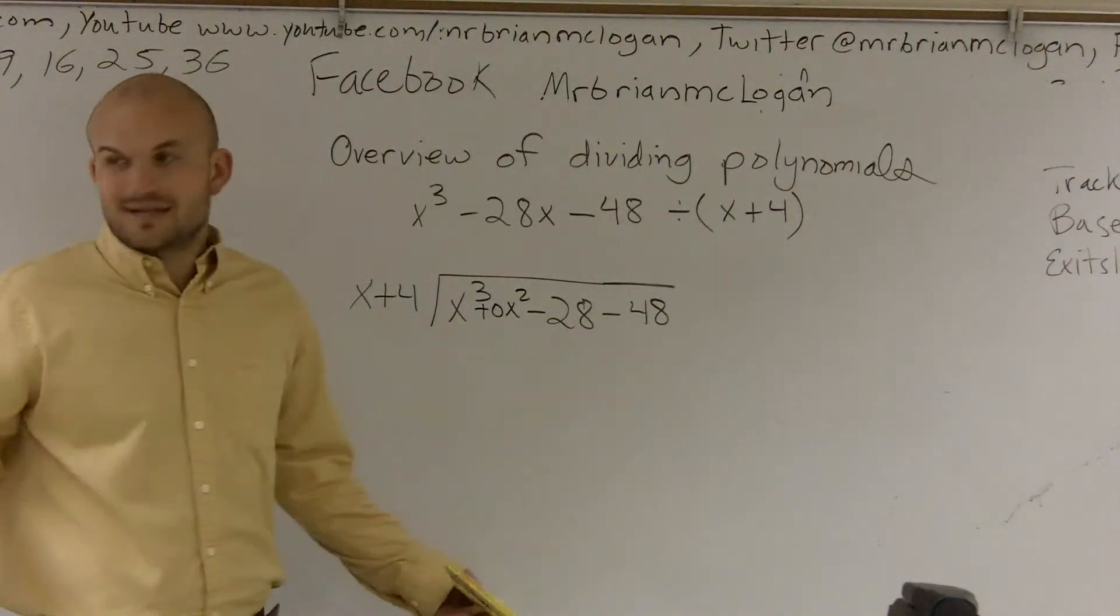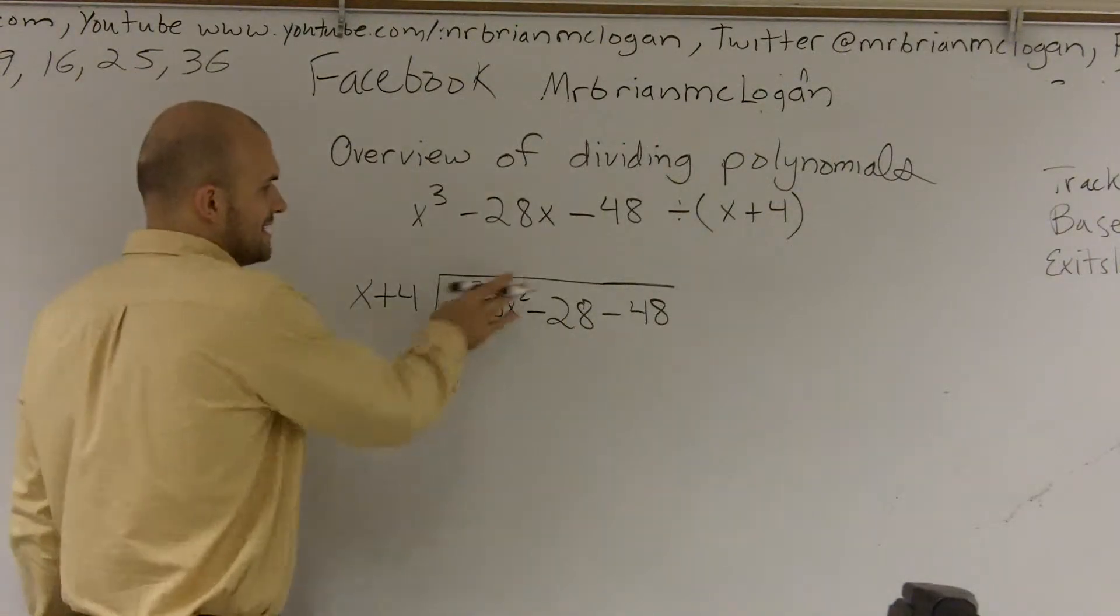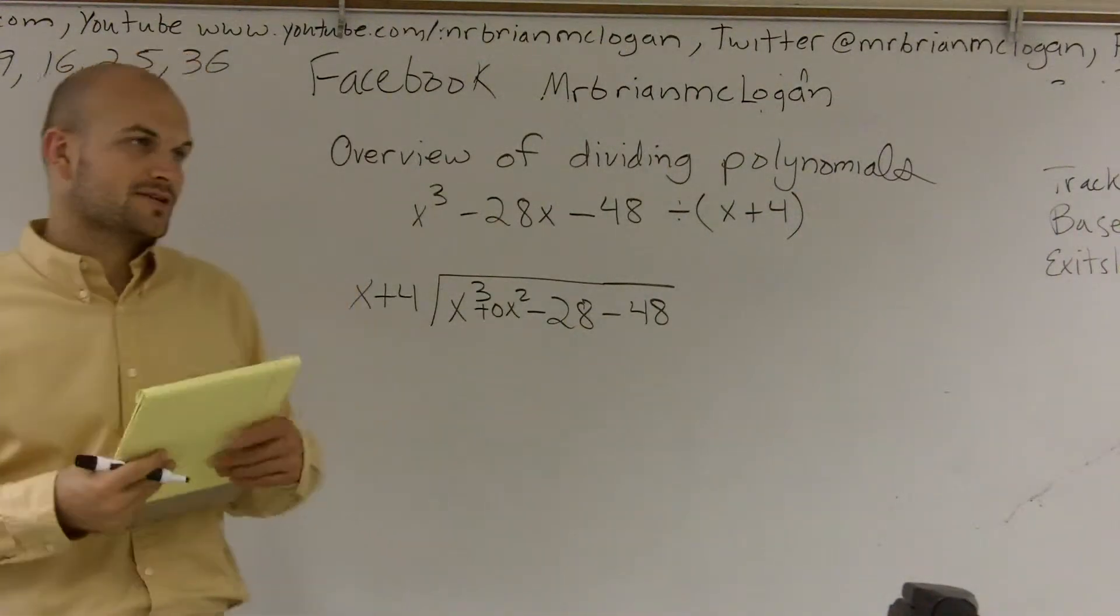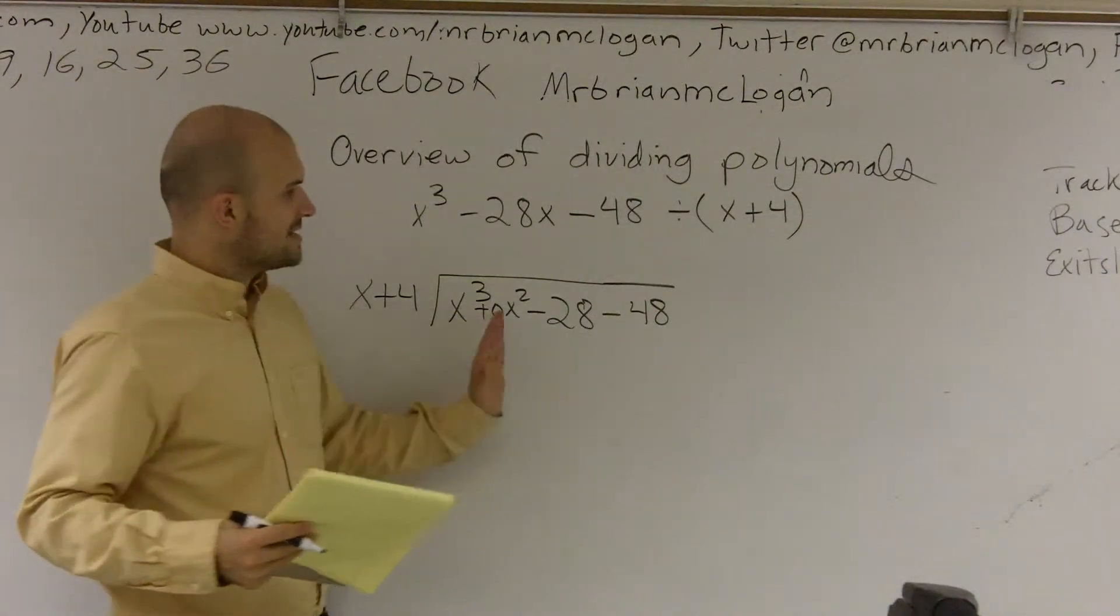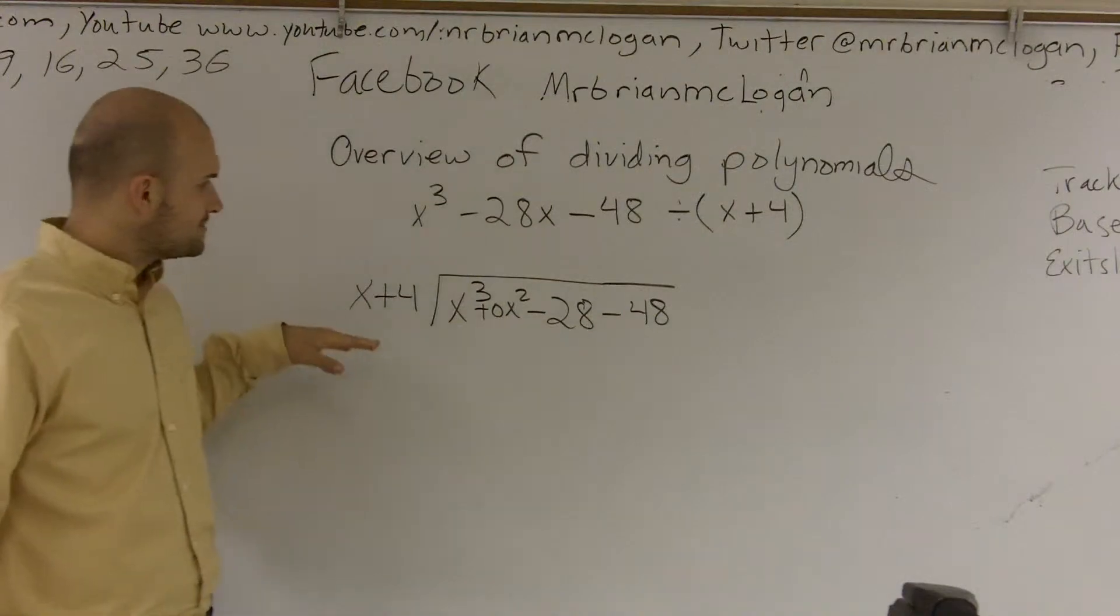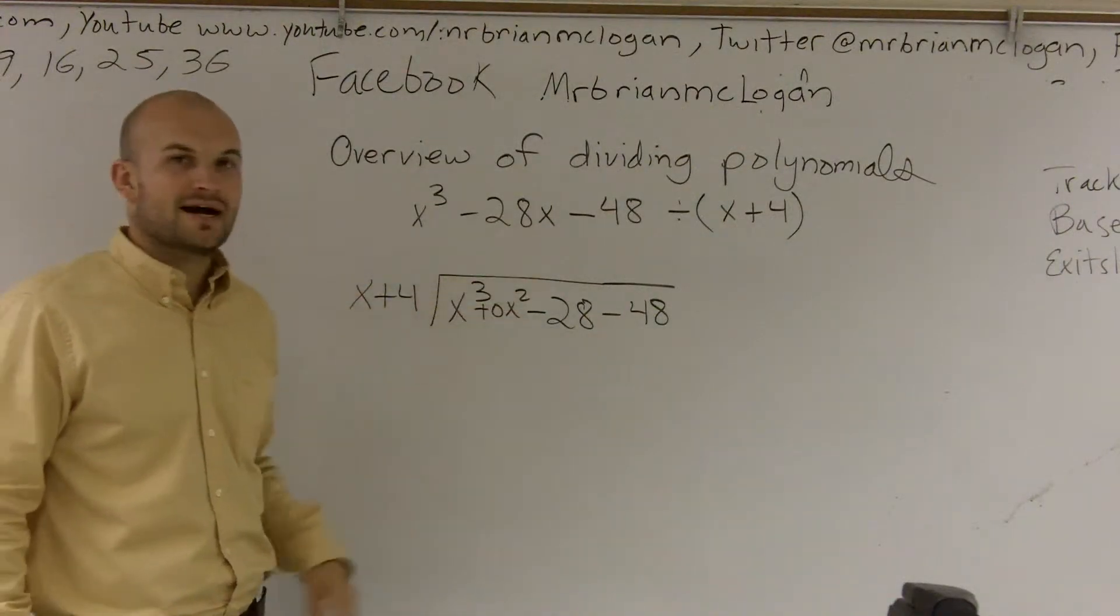So I can simply write plus 0x squared as a placeholder, because 0 times x squared is still 0. But we're going to need that placeholder when doing our long division, and you'll see throughout my videos why that placeholder becomes so important and how we're going to divide into it.